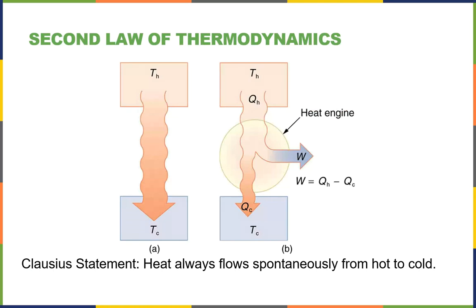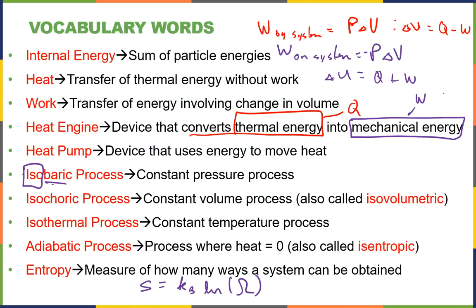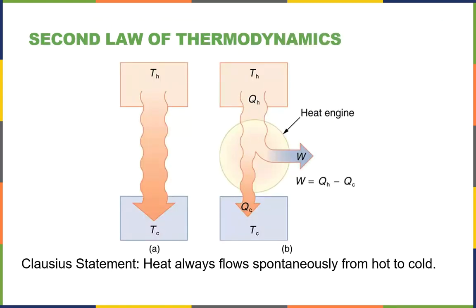A heat engine has one job: to convert thermal energy into mechanical energy. We draw a schematic diagram with a hot reservoir at temperature TH, a cold reservoir at temperature TC, and heat that flows naturally — according to the Second Law of Thermodynamics — which tells us the direction heat is going to flow.